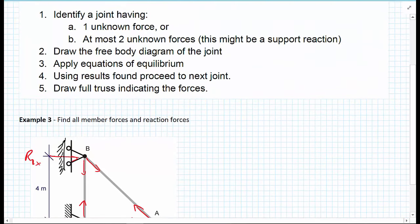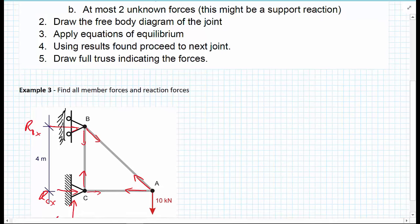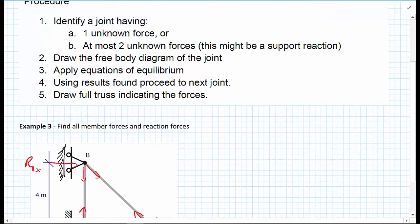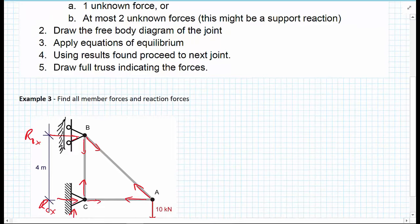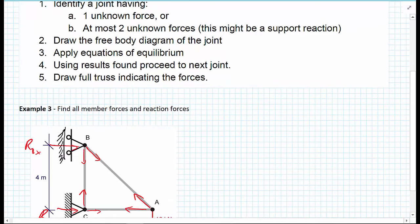Looking at our rules, do we have anywhere with just one unknown force? No, we don't. But we do have joint A, which has at most two unknown forces, and so we're going to start our analysis at this point.